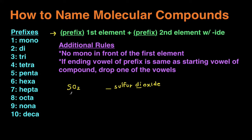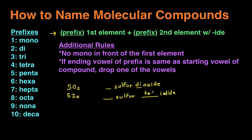Let's do a couple more examples. Next one is SI4. First, identify your two elements: sulfur stays as is, and I is iodine — but we add '-ide' to the end, so it becomes 'iodide.' There is one sulfur, which means 'mono,' but we don't use 'mono' for the first element, so it stays 'sulfur.' There are four iodides, and four is 'tetra,' so we put 'tetra' in front. The name for SI4 is sulfur tetraiodide.